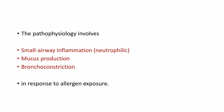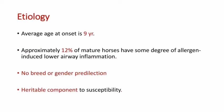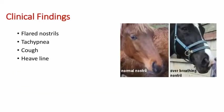Coming to the etiology — this disease usually affects older horses, with an average onset at approximately nine years old. Approximately 12% of mature horses have some degree of allergy-induced lower airway inflammation. There is no breed or gender predilection, but there is a heritable factor in this disease.